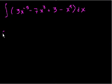So what does this equal? Well in this case, 3x to the minus 5 power. So we take the exponent, we add 1 to the exponent. So now we get x to the negative 4, right?